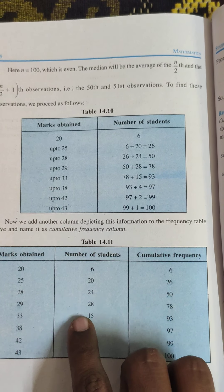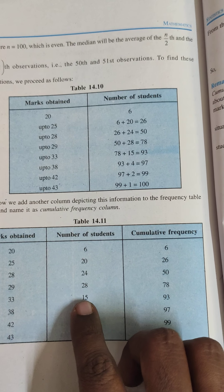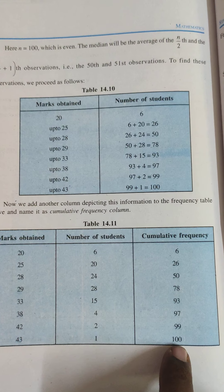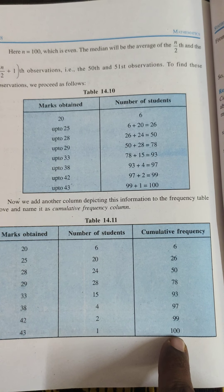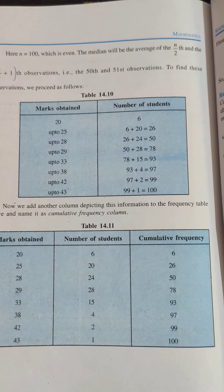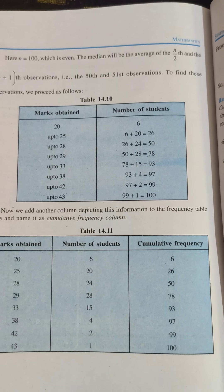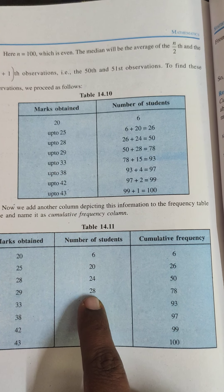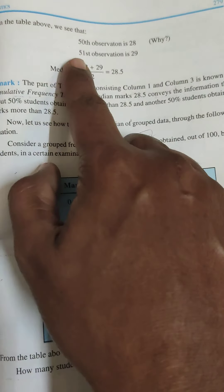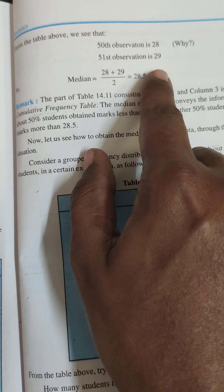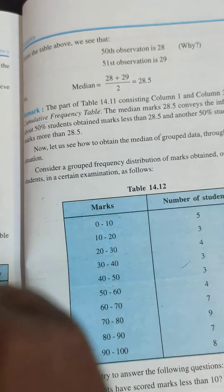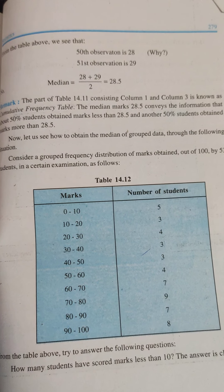The last cumulative frequency is 100, equal to the total number of data. Since n = 100 is even, we find the 50th and 51st observations. The 50th observation is 28 and the 51st observation is 29. Therefore the median = (28 + 29) ÷ 2 = 28.5. This is how we calculate the median of grouped discrete data.